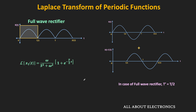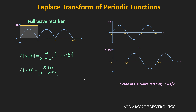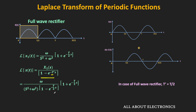Once we have X1(s), we divide by the exponential term (1 minus e^(-T's)) to get the Laplace transform of the periodic function. For the full wave rectifier, the time period T' equals T/2, since the signal repeats after T/2. So the Laplace transform is X1(s) divided by (1 minus e^(-Ts/2)). Expressing in terms of ω: T equals 2π/ω, so T/2 equals π/ω. That is the Laplace transform of the full wave rectifier.